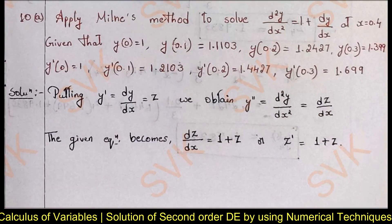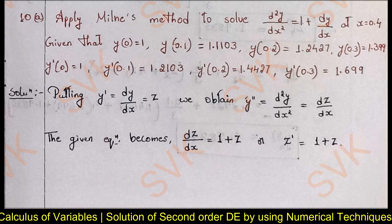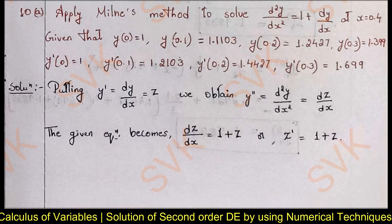Moving on to question 10a: apply Milne's method to solve the second order ODE at x = 0.4. Given: y(0) = 1, y(0.1) = 1.1103, y(0.2) = 1.2427, y(0.3) = 1.399, y'(0) = 0.499, y'(0.1) = 1.2103, y'(0.2) = 1.4427, y'(0.3) = 1.699. Putting y' = z and y'' = dz/dx, the equation becomes dz/dx = 1 + z.